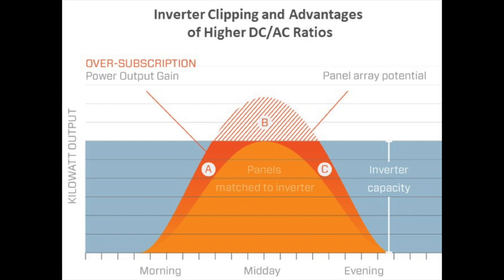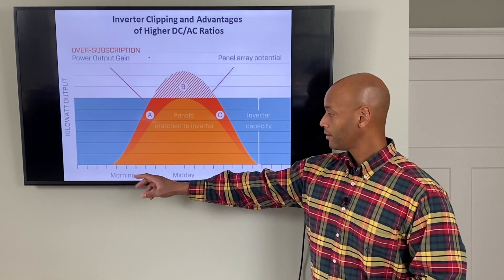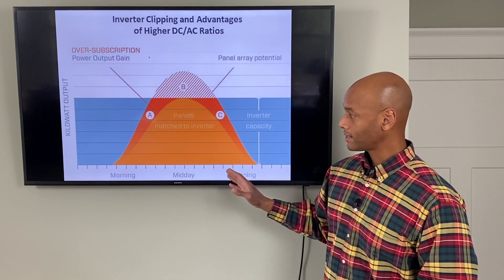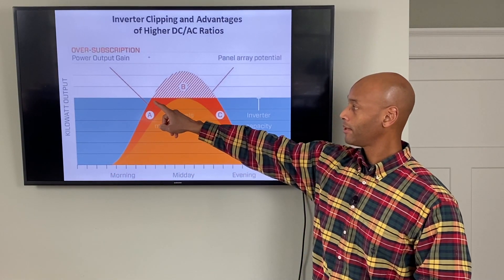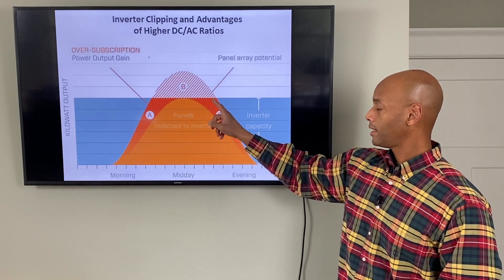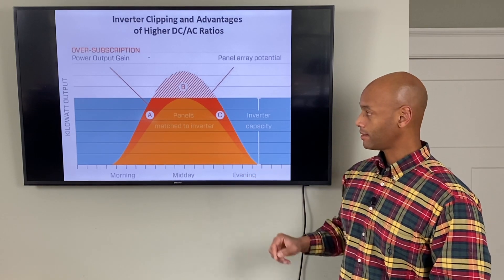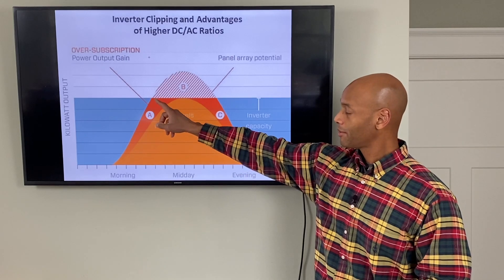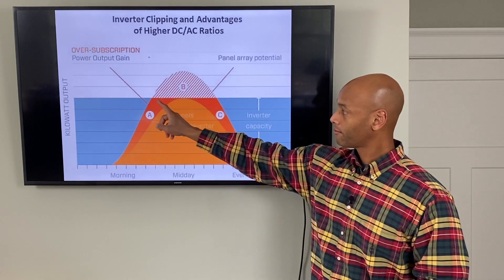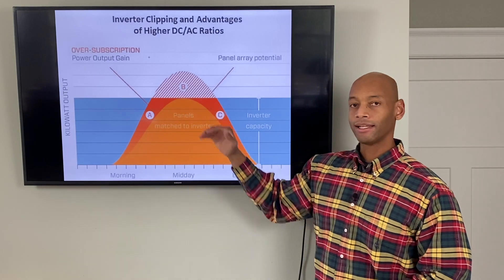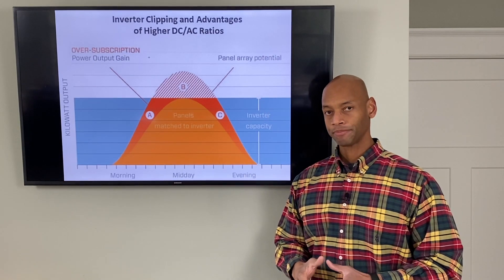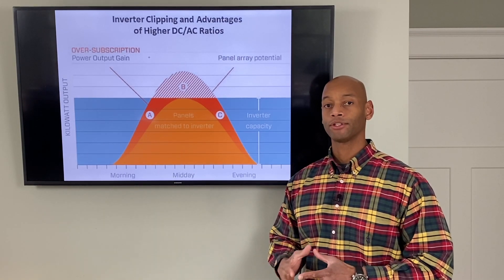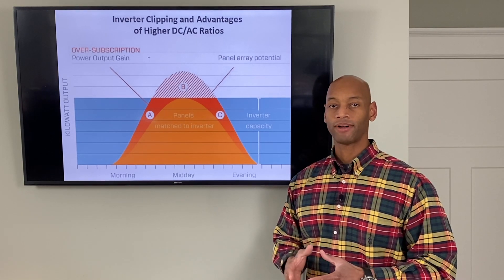The chart we're looking at here illustrates what is sometimes called clipping loss. On the x-axis is time. As the sun rises, solar power production starts to peak up, reaches its peak in the middle part of the day, and then begins to fall off as the sun sets in the evening. Near the top of this curve, the inverter output sort of flat-lines at a certain level, which illustrates the power rating of the inverter. For example, let's say your solar panels have a total power rating of 7.5 kilowatts.